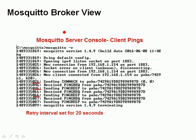This is the broker view. I've connected my client to it and started the broker in verbose mode so I can see what's happening. I've turned the Keep Alive period down so we can see some activity. You can see we're getting a ping request and a ping response going at regular intervals — I've set it to 20 seconds.